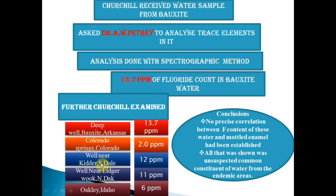Churchill then collected samples from various regions: Colorado Springs had 2 ppm, Bauxite 13.7 ppm, and other locations 12, 11, and 6 ppm. All regions where mottling was recorded had high amounts of fluorine in the drinking water. However, a precise correlation between fluoride content and mottled enamel could not yet be established. This work did prove that it was not due to aluminum, but due to the amount of fluorine in the water causing fluorosis. Accidentally, fluorine was discovered as the causative element.